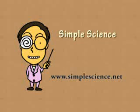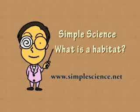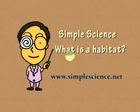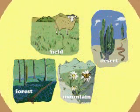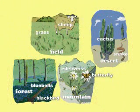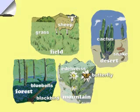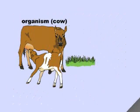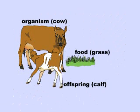Simple Science: What is a Habitat? A habitat is the place where an organism lives. An organism can be a plant or an animal. An organism lives where it can find food and produce offspring.